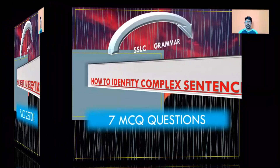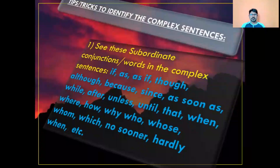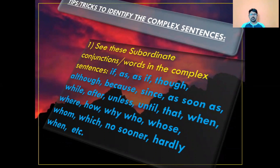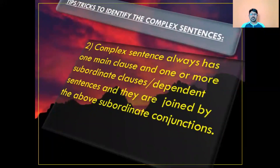How to identify complex sentences — seven MCQ questions with tips and tricks. Tip one: look for these subordinate conjunctions or words in complex sentences: if, as, as if, so, although, because, since, as soon as, while, after, unless, until, that, when, where, how, why, who, whose, whom, which, no sooner, hardly, when, etc. Tip two: a complex sentence always has one main clause and one or more subordinate or dependent clauses, joined by the above subordinate conjunctions.